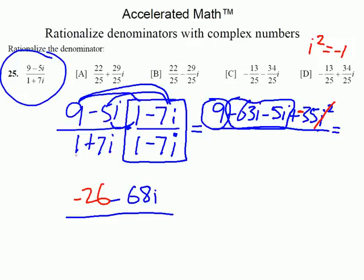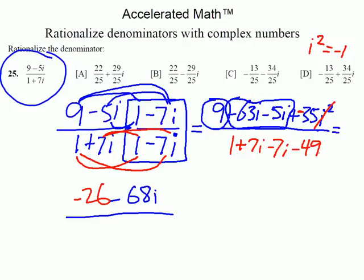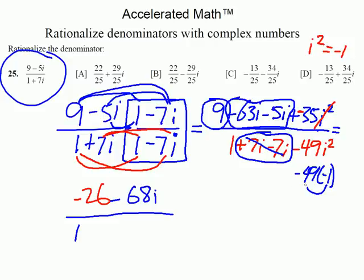Let's see what happens in the denominator — we'll do FOIL again. First two terms: 1 times 1 equals 1. Then plus 7i, and then the outer terms give minus 7i. Plus 7i and minus 7i cancel each other out. The last two terms: 7i times negative 7i is negative 49i squared. The i squared gets replaced with negative 1, so negative 1 times negative 49 is plus 49. We've got 1 plus 49, and the i's canceled out.